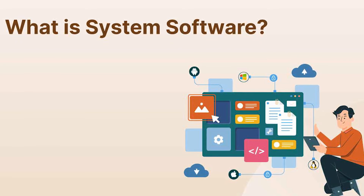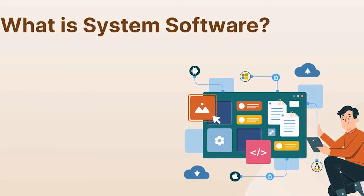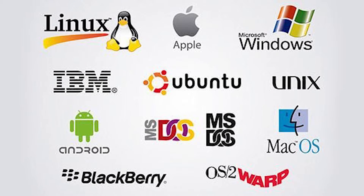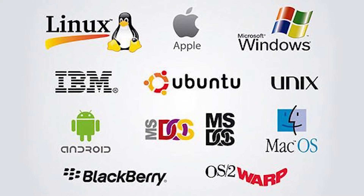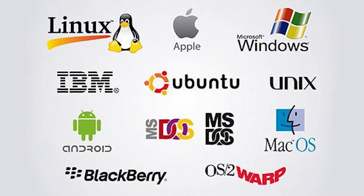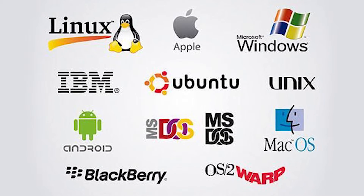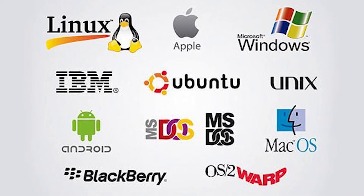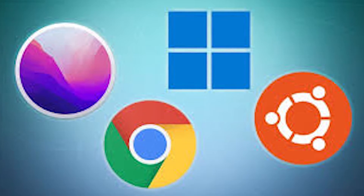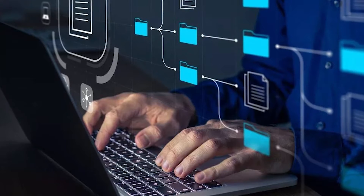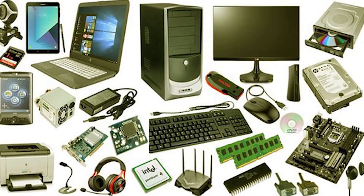System software includes operating systems like Windows, Mac OS, and Linux. It manages and controls the overall operations of the computer hardware. Under system software, we have a few variations: operating systems, language processors, and device drivers.